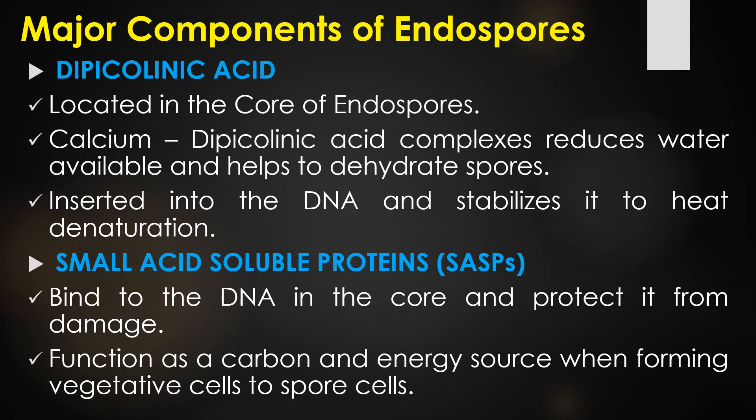There are two major components present in the endospores. The first one is dipicolinic acid, located in the core of the endospores. The calcium dipicolinic acid complex reduces available water and helps to dehydrate the endospores. This dipicolinic acid is inserted into the DNA and stabilizes it from heat denaturation; specifically, it prevents heat denaturation of the DNA present within the endospores.